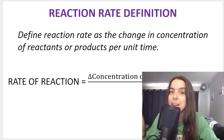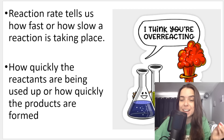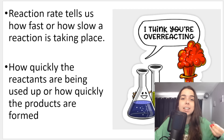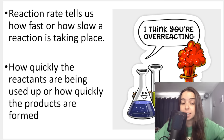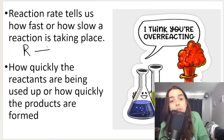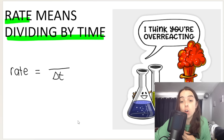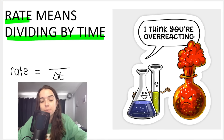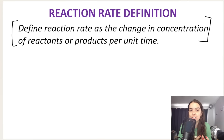In this lesson, we'll go over how to measure and determine the rate of reaction using a calculation. We already discussed in previous videos that a reaction rate tells us how fast or how slow a reaction is taking place — how quickly we are using up the reactants, which are on the left-hand side of the arrow in a chemical equation, or how quickly we are forming the products. According to your exam guidelines, you need to be able to define reaction rate as the change in concentration of reactants or products per unit time.